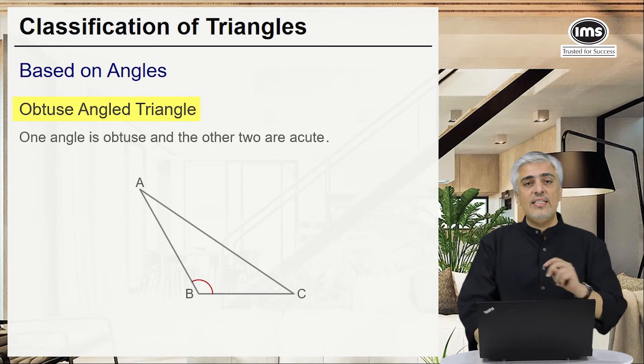You can see the diagram in this case—angle ABC is greater than 90 while the other two angles are acute.